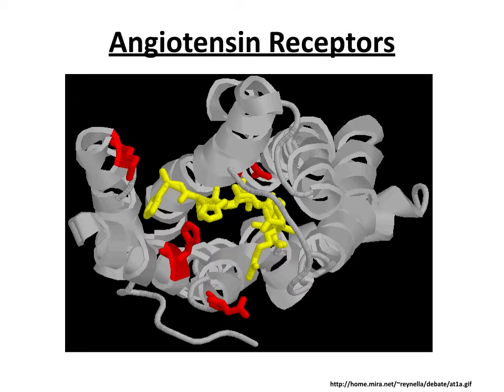Angiotensin receptors are G protein-coupled receptors with two subtypes, cleverly titled AT1 and AT2. The most known angiotensin II effects are mediated by AT1. AT2 gets transiently expressed in fetal tissue but is not expressed much in adults and we don't understand it very well. This simplifies your life a bit because with angiotensin you really need to know one receptor: the AT1 receptor, which is expressed in many tissues including the cardiovascular system and, of course, the adrenal glands — involved in stimulation of aldosterone.